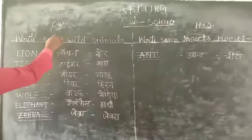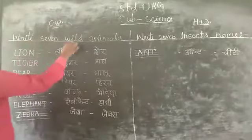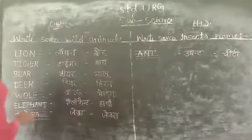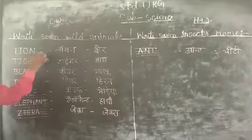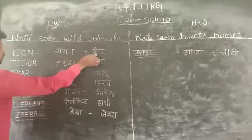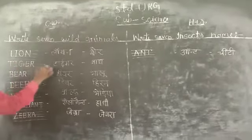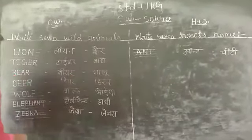Classwork: spelling of animal names. Lion: L-I-O-N. Tiger: T-I-G-E-R, tiger.